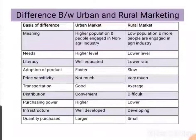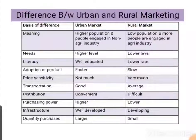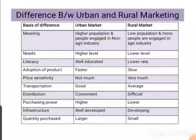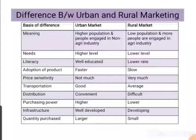Regarding price sensitivity, urban people are not much sensitive to price, whereas rural people are very price-sensitive and tend to buy small quantities at low prices. Transportation is much more developed in urban areas than rural areas. From a marketer's perspective, distribution is easy and convenient in urban areas but very difficult in rural areas due to transportation challenges, even though road connectivity has reached about 90%.